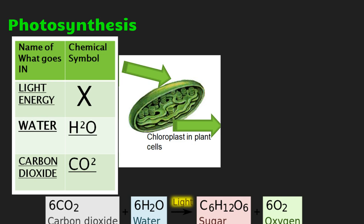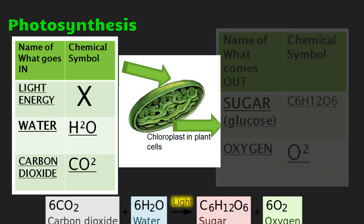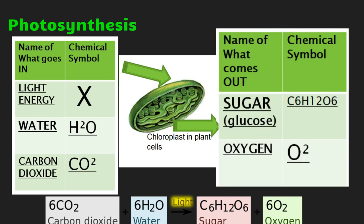Look down at the bottom — you can see the complete balanced equation for photosynthesis. Make sure you know the names of the symbols and the actual molecule that is called. What comes out are called the products. So the reactants go in, the products come out. The products that photosynthesis makes are sugar and oxygen, and here are their chemical symbols.